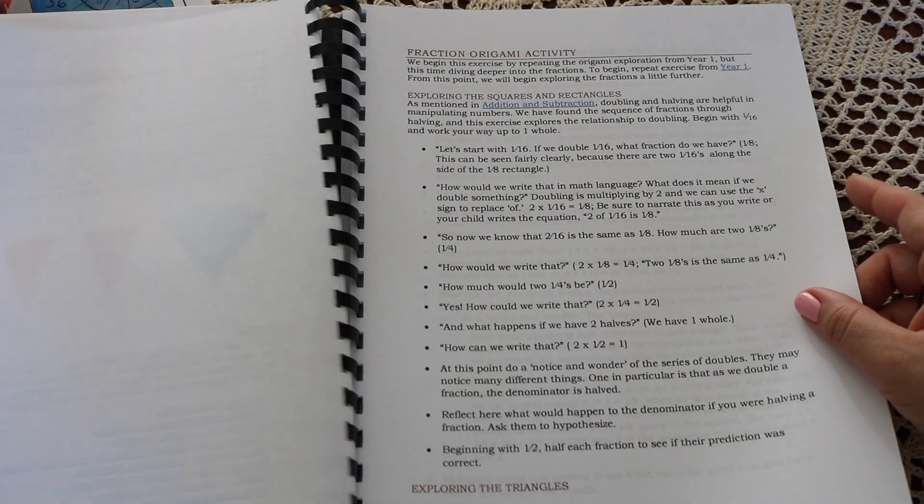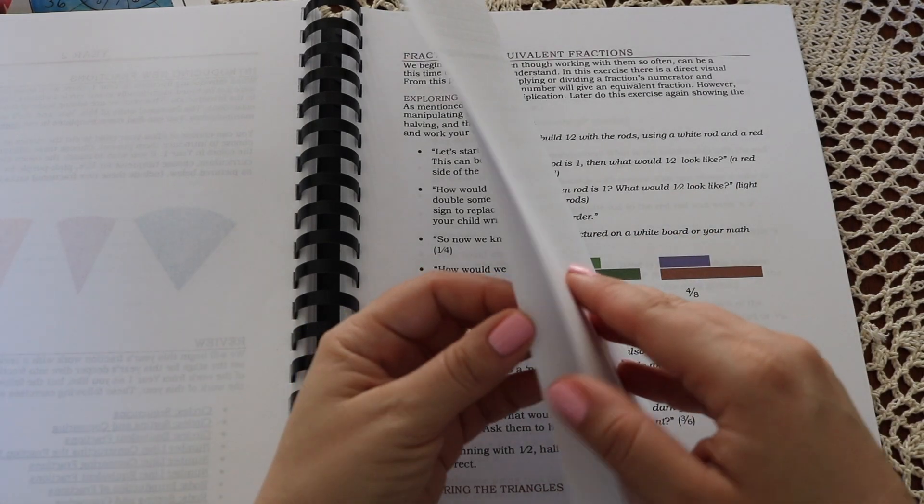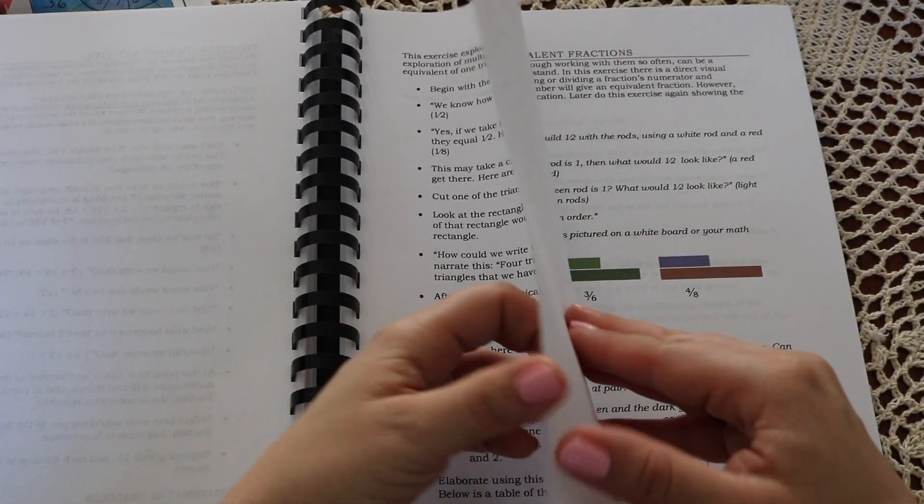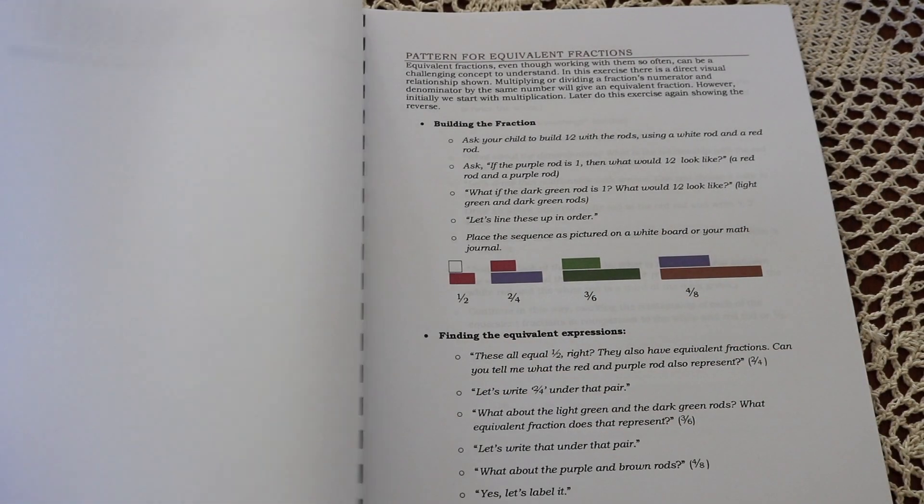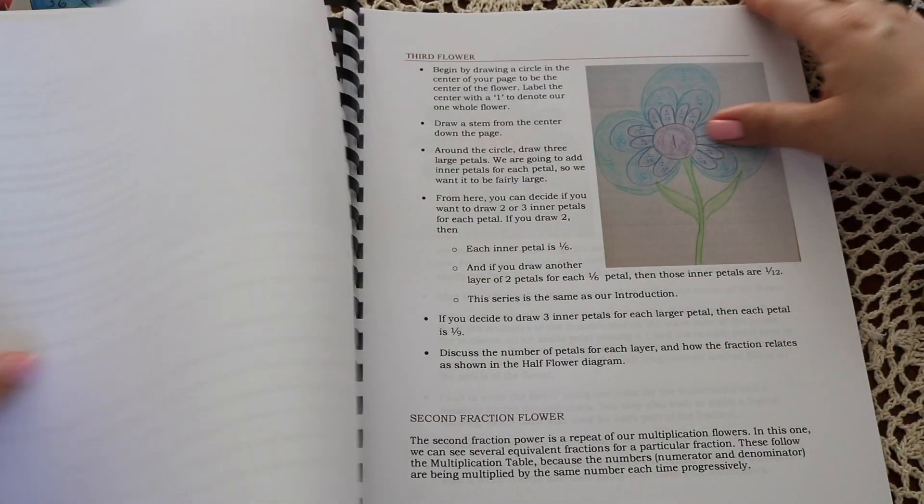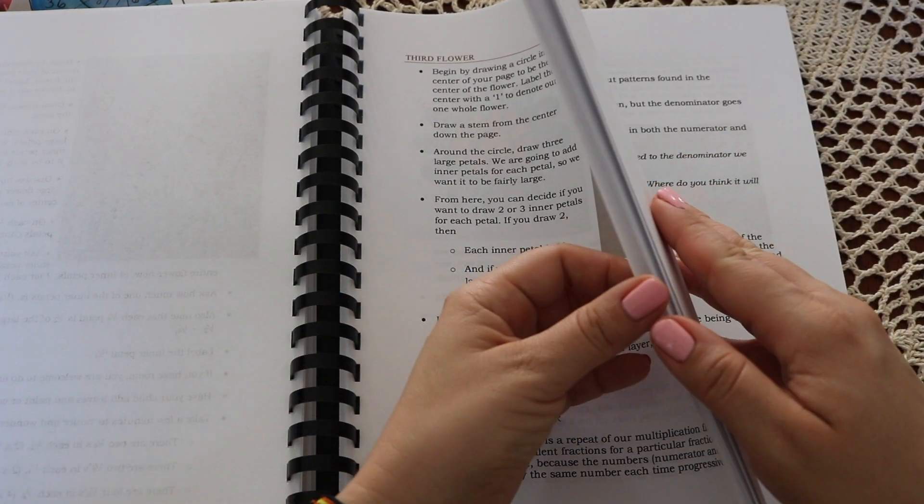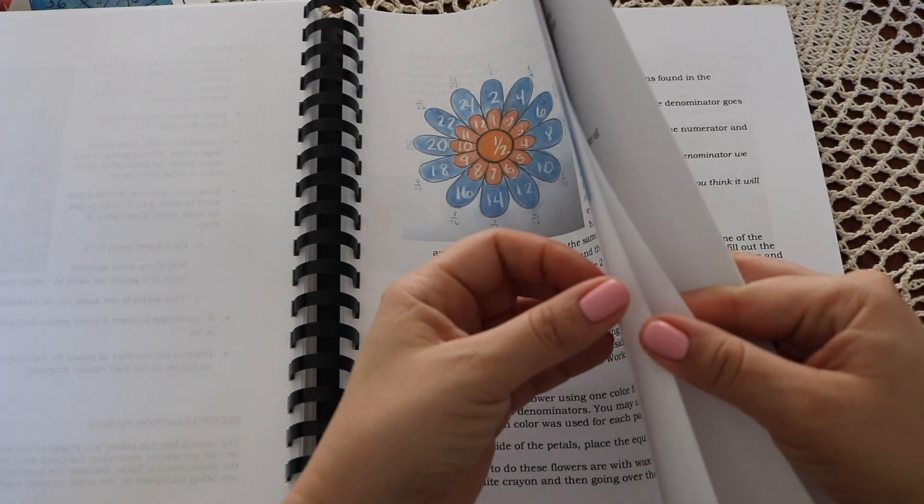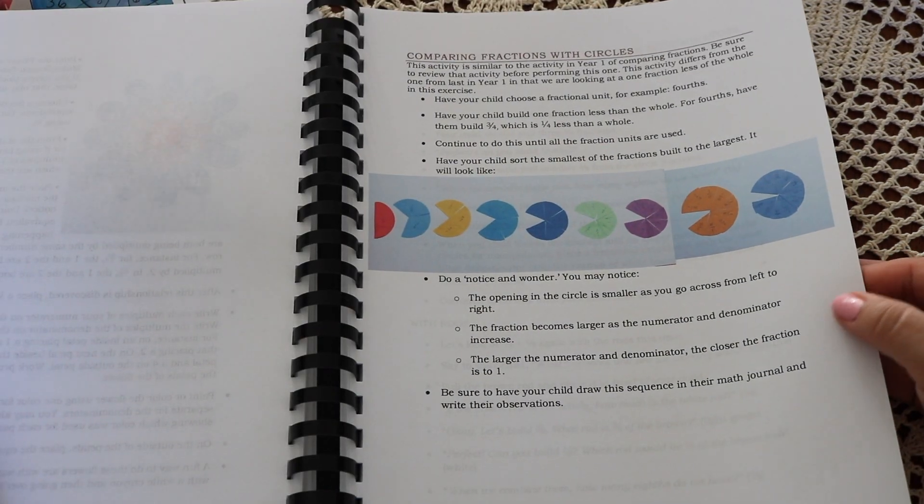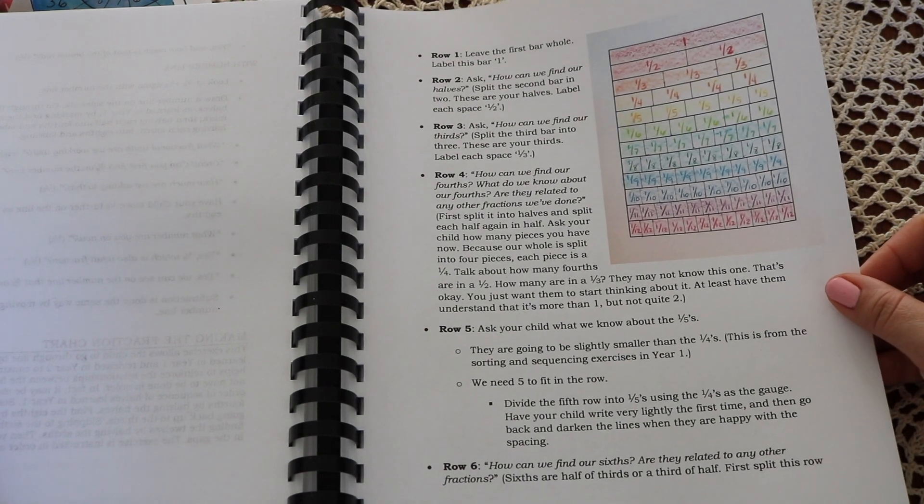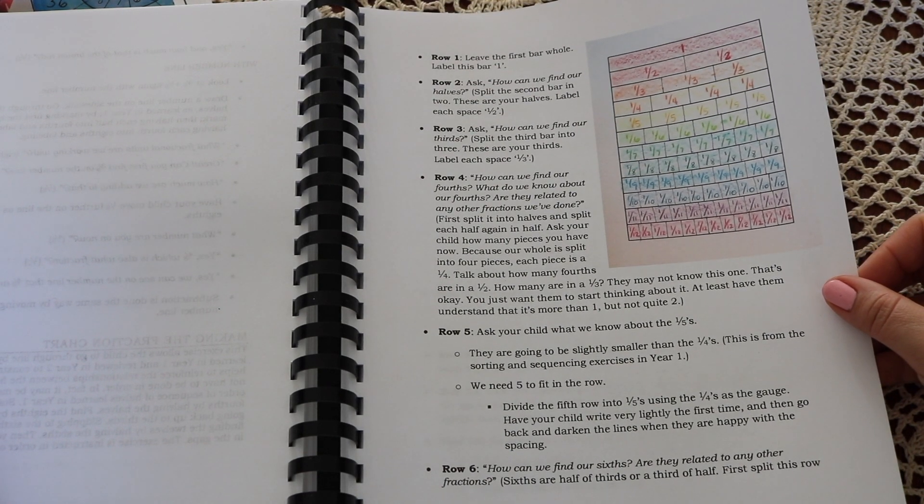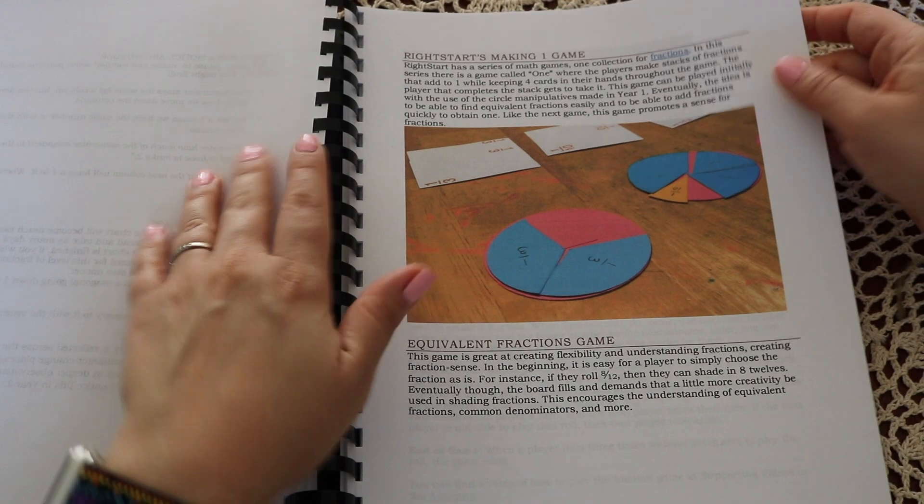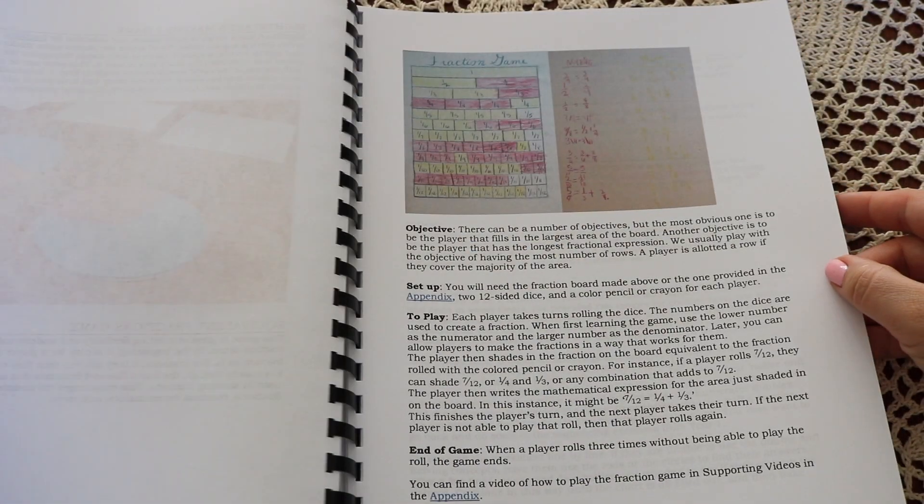In year two, we work from fractions year one with more focus on equivalent fractions. There are a variety of exercise recommendations to reinforce the work of equivalent fractions along with the four processes of fractions. We'll create fraction flowers and a fraction chart in main lesson book work, learning the concept of addition and subtraction with like denominators with circle and rod manipulatives. There's a fractions game and baking recipes. Finally, an introduction to fractions multiplication and division.